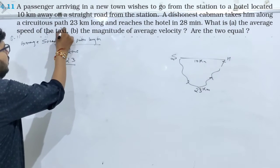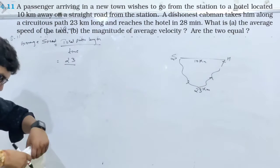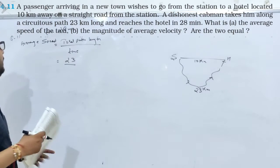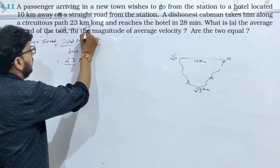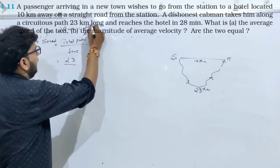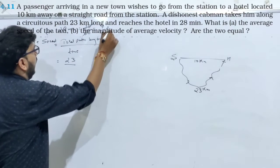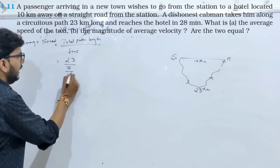Time लगा है 28 minutes का time. अब इसको 28 को hours में change कर लीजिए, तो 28 divided by 60, 4 से divide करें, तो 7 divided by 15 hour. So it will be 7 by 15 hour.